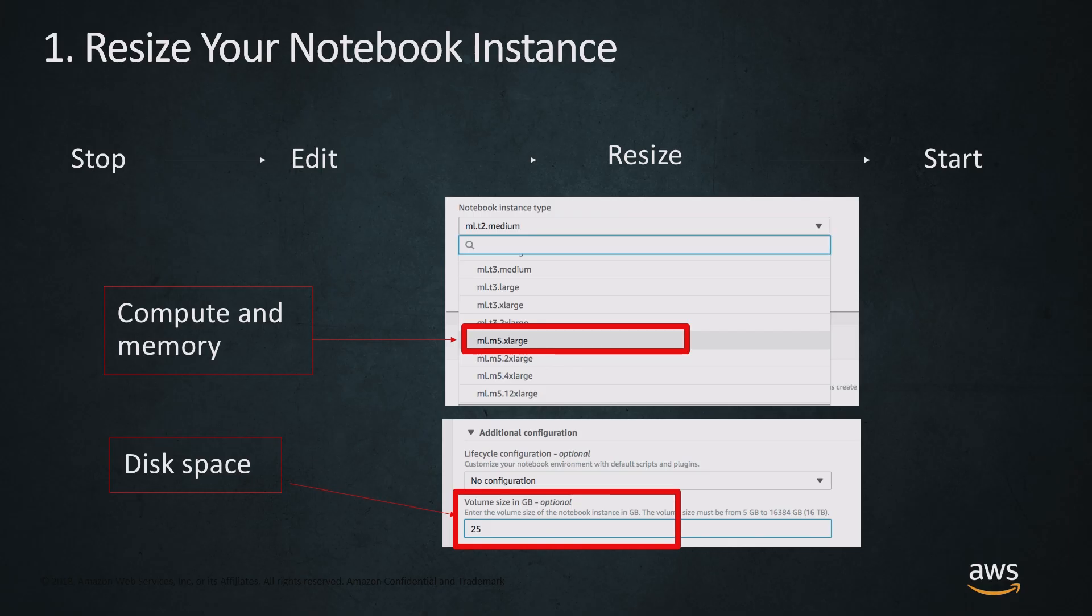First, if you are following along and have a SageMaker notebook instance that is already launched, I want you to resize that notebook instance. The best way to launch a notebook instance initially is to start small because notebook instances are going to be up for usually eight plus hours a day, so you want to keep your costs down by selecting a smaller instance.